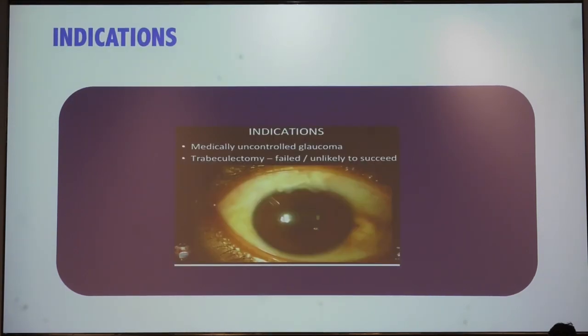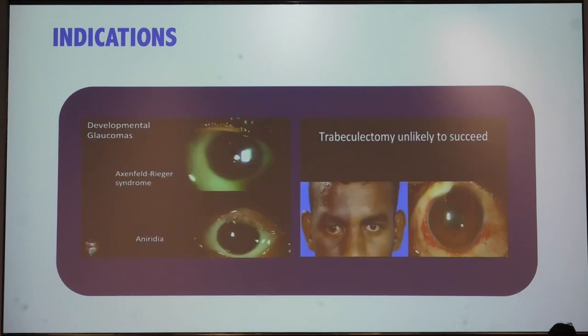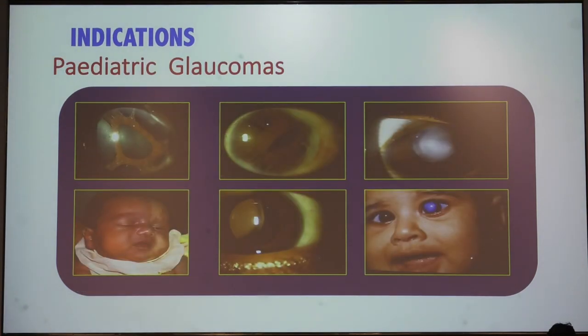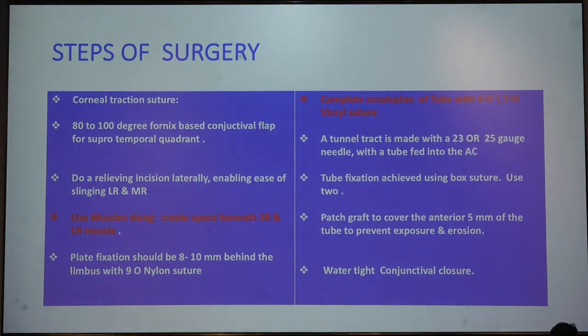These are the indications for GDD. If trabeculectomy is likely to fail — such as in Sturge-Weber syndrome, Axenfeld syndrome, or aniridia — GDD is indicated. Secondary glaucomas and pediatric glaucoma are also common indications for glaucoma drainage devices.